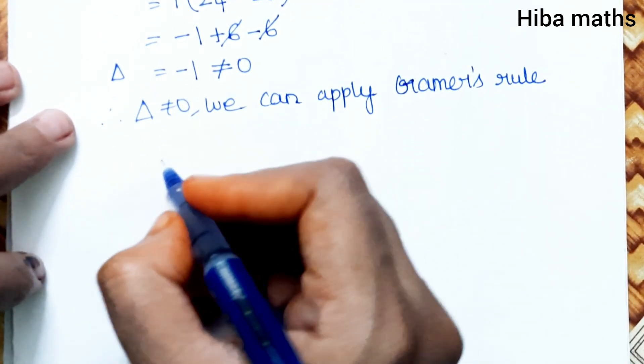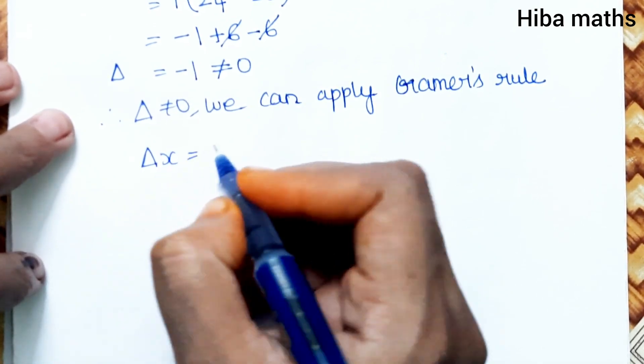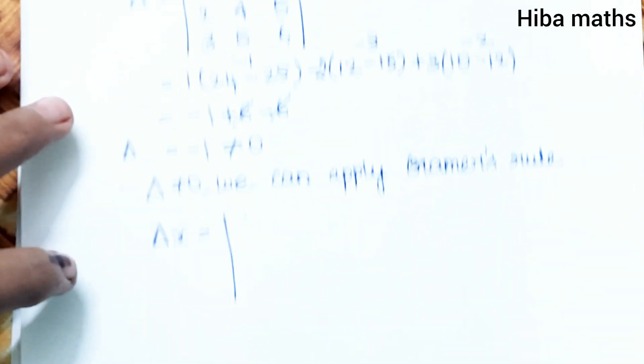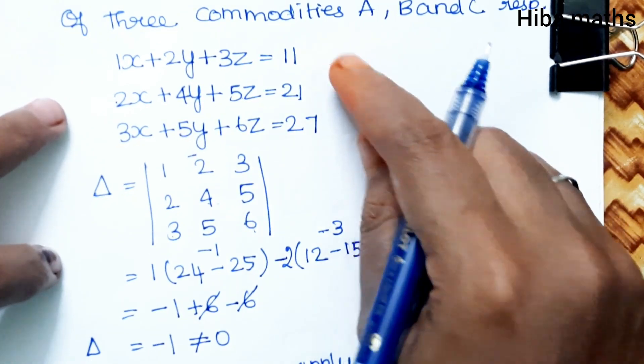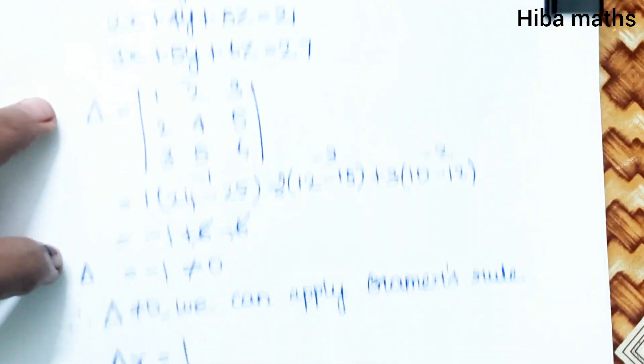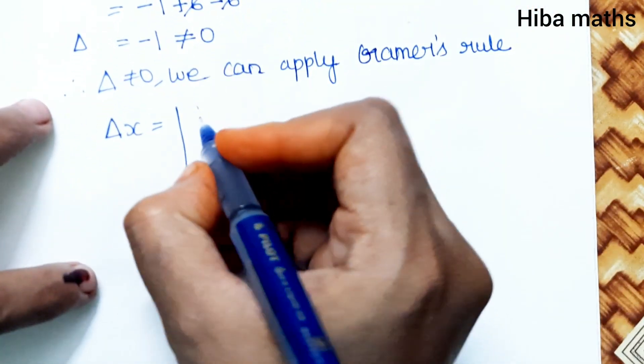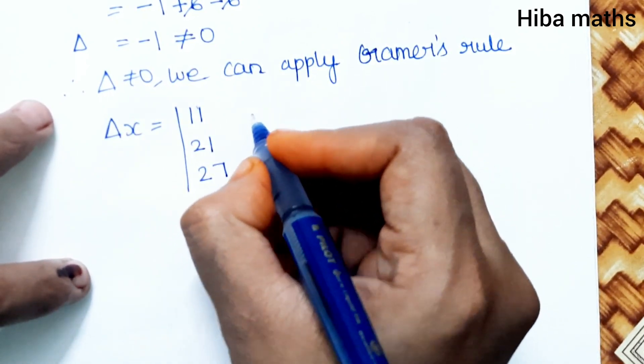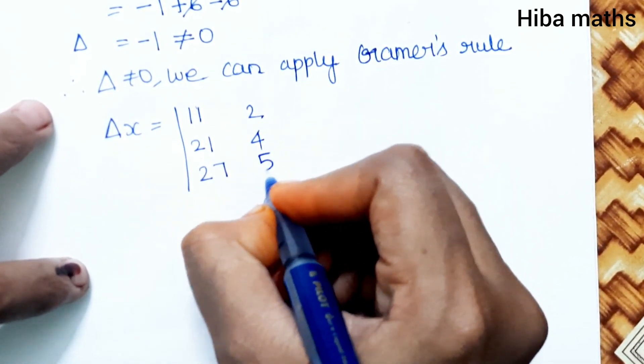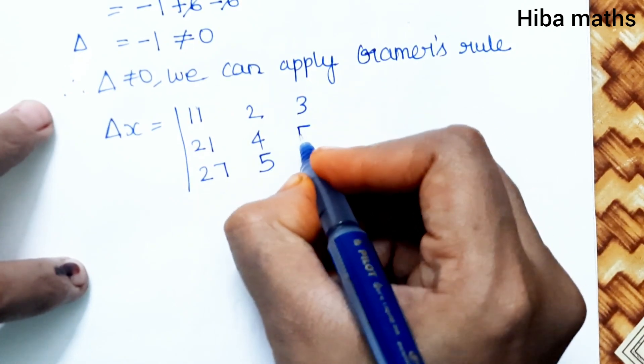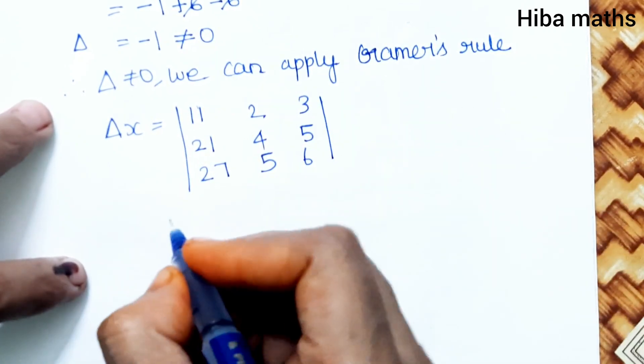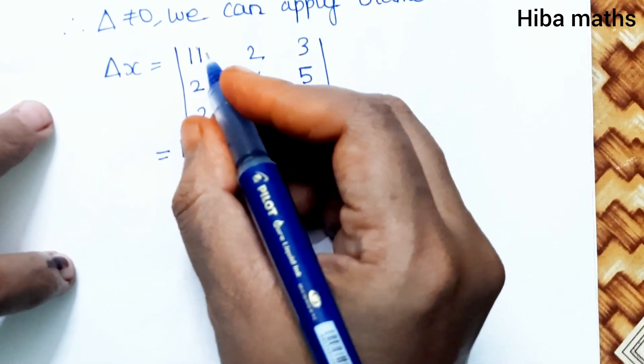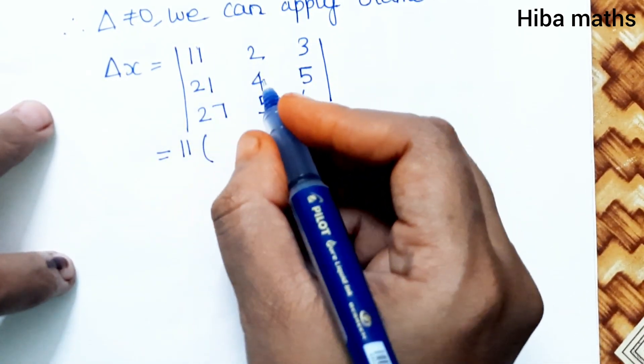Del X: Replace the first column with 11, 21, 27. The matrix is: first column 11, 21, 27; second column 2, 4, 5; third column 3, 5, 6.